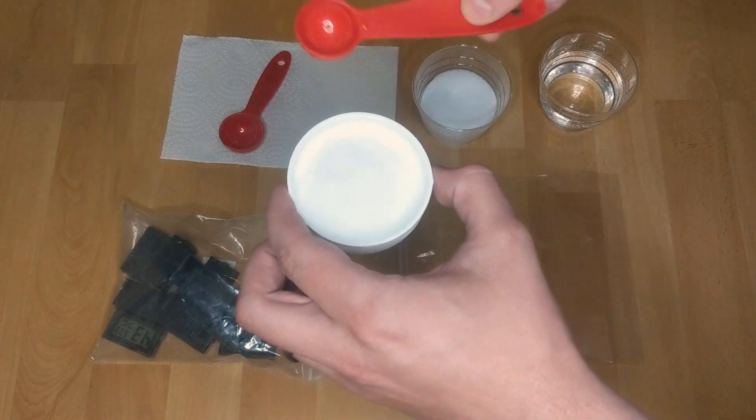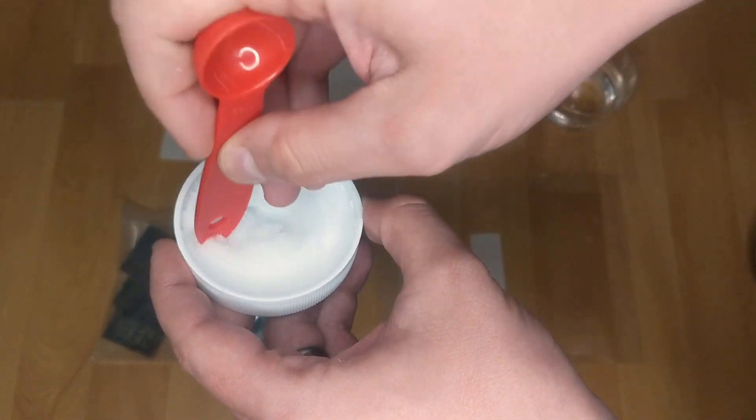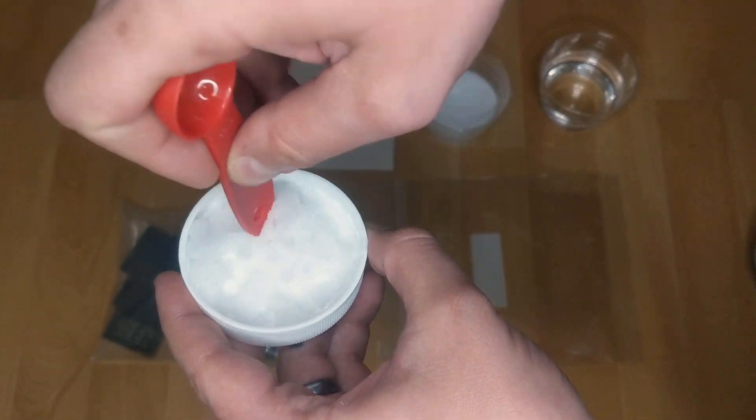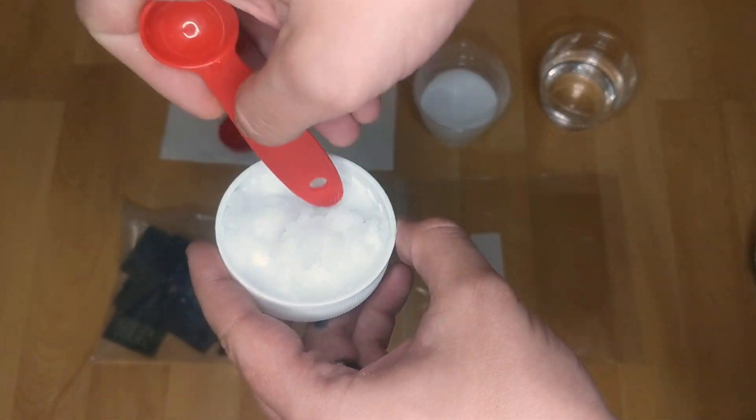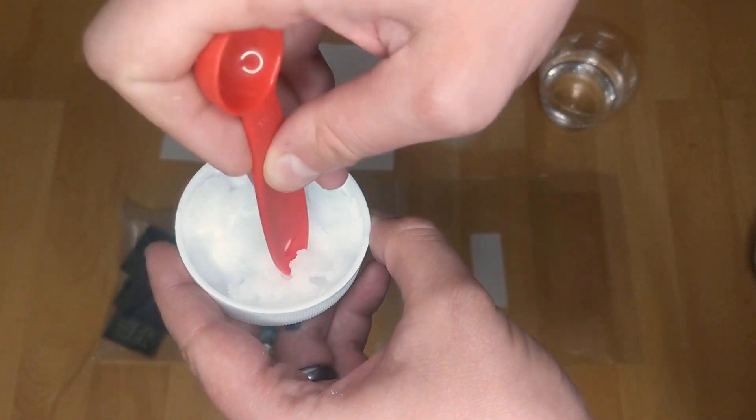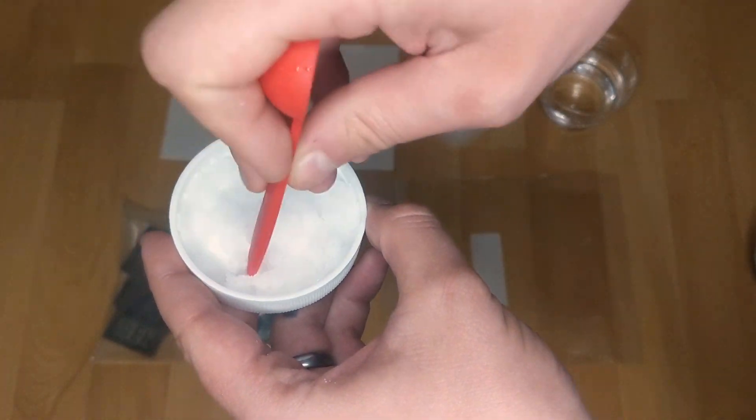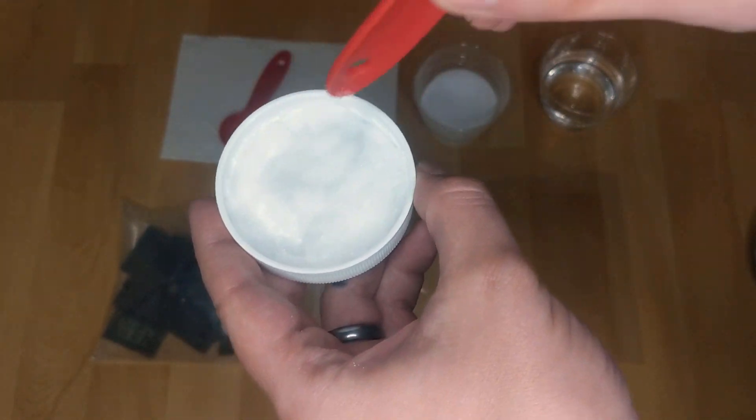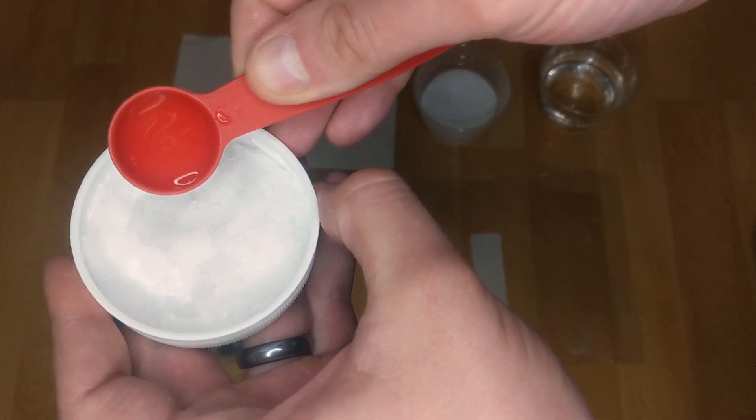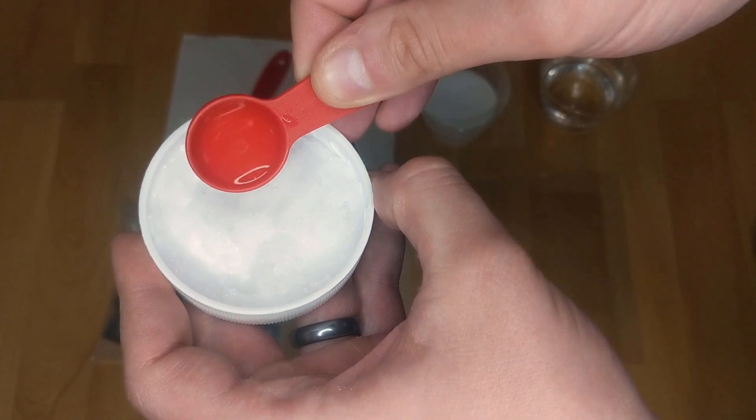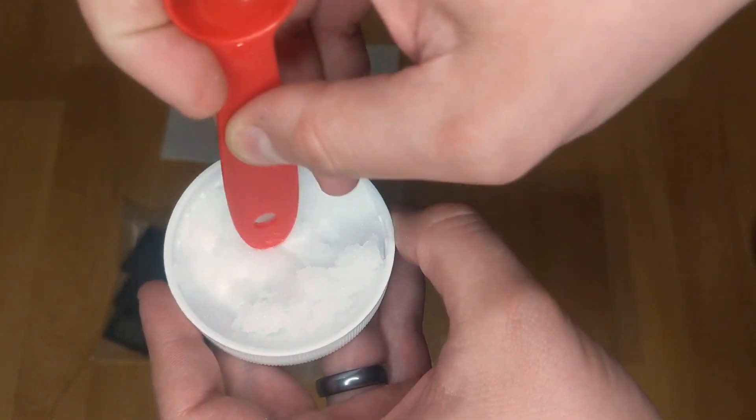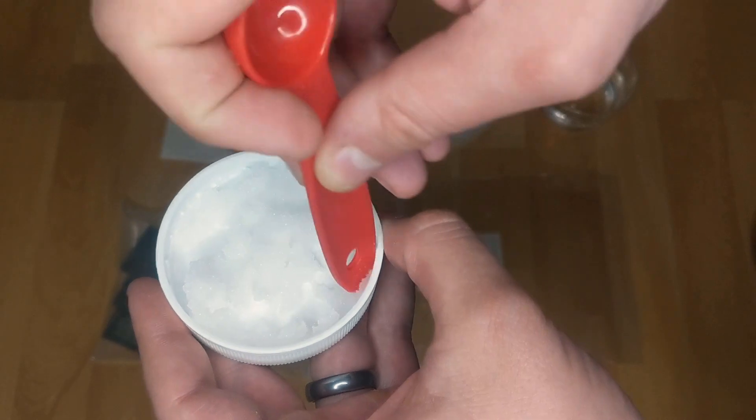And again you want it to be the consistency of a slurpee, so you mix it up. This is why I say you need a little bit more, like a few drops more, just to make it. It's just a little bit too little. Let's go drop by drop because you don't want to get too much in there. You just want it to be that consistency.